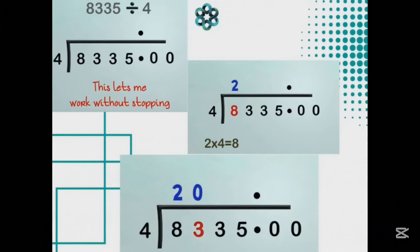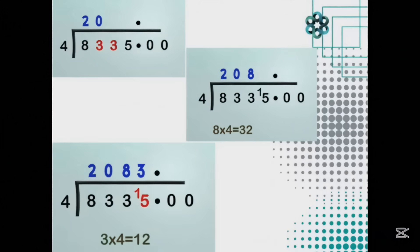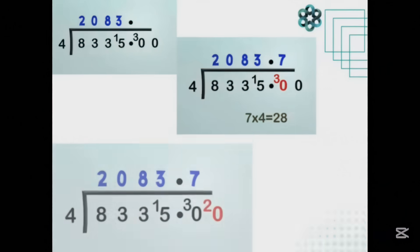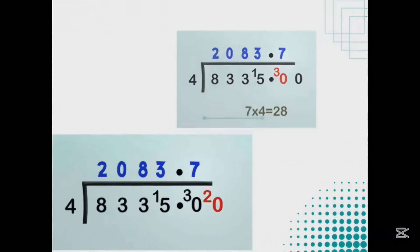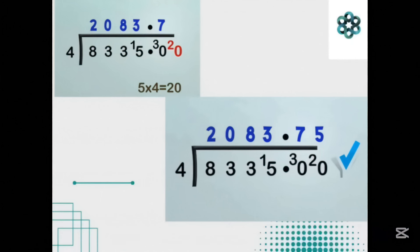Now I am ready to calculate. 4 into 8: two 4s are 8. 4 into 3: it does not go — put a 0. Now we cannot ignore the 3 we have not used yet. How many 4s in 33? Eight 4s are 32, remainder 1. 4 into 15: three 4s are 12, remainder 3. How many 4s in 30? Seven 4s are 28, remainder 2. And how many 4s in 20? Five 4s are 20 — no remainder. Put the 5 on the answer line and I have finished.